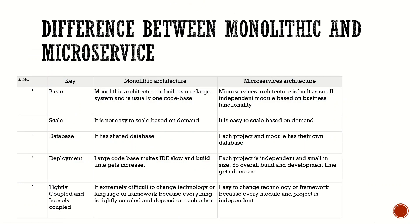I have listed out key points on which we can differentiate both architectures. Monolithic architecture is built as one large system and is really one code base. For example, if we are going to develop a banking application with multiple modules but we develop the whole application in a single project, then that architecture is called monolithic architecture. There is only one single database used by this architecture.